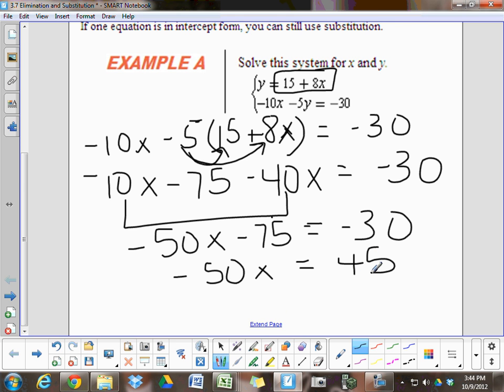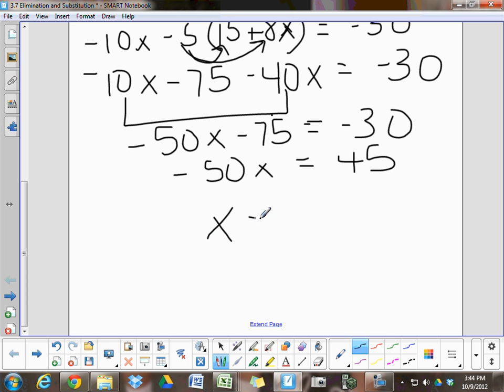Negative 30 plus 75 is 45. And finally, we're going to divide both sides by negative 50. And you get negative 45 over 50 would reduce to negative 9 tenths as a decimal, negative 0.9.